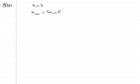The solution to number 8, part A. What we have is that A1 equals k, and any term in the sequence is 3 times the previous term plus 5. For part A, we've got to figure out what the second term is in terms of k — A2 in other words.